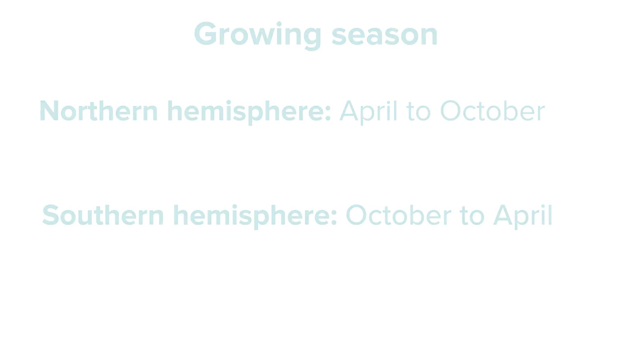Grape vines, like all plants, have an optimal range of temperatures in which they're able to grow. Too cold and the grape vine will struggle to grow and potentially die. Too warm and the grape vine will lack the conditions necessary for a winter dormancy, becoming stressed and having a reduced lifespan.